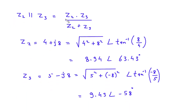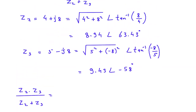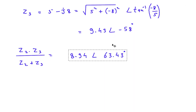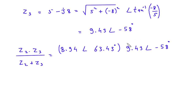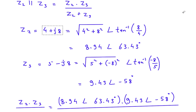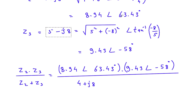Now we will solve Z2 into Z3 divided by Z2 plus Z3. For the numerator we are multiplying Z2 and Z3, so we take the polar form because multiplication and division are better performed in polar form. For the denominator we are doing addition, so we take the rectangular form of Z2 and Z3.